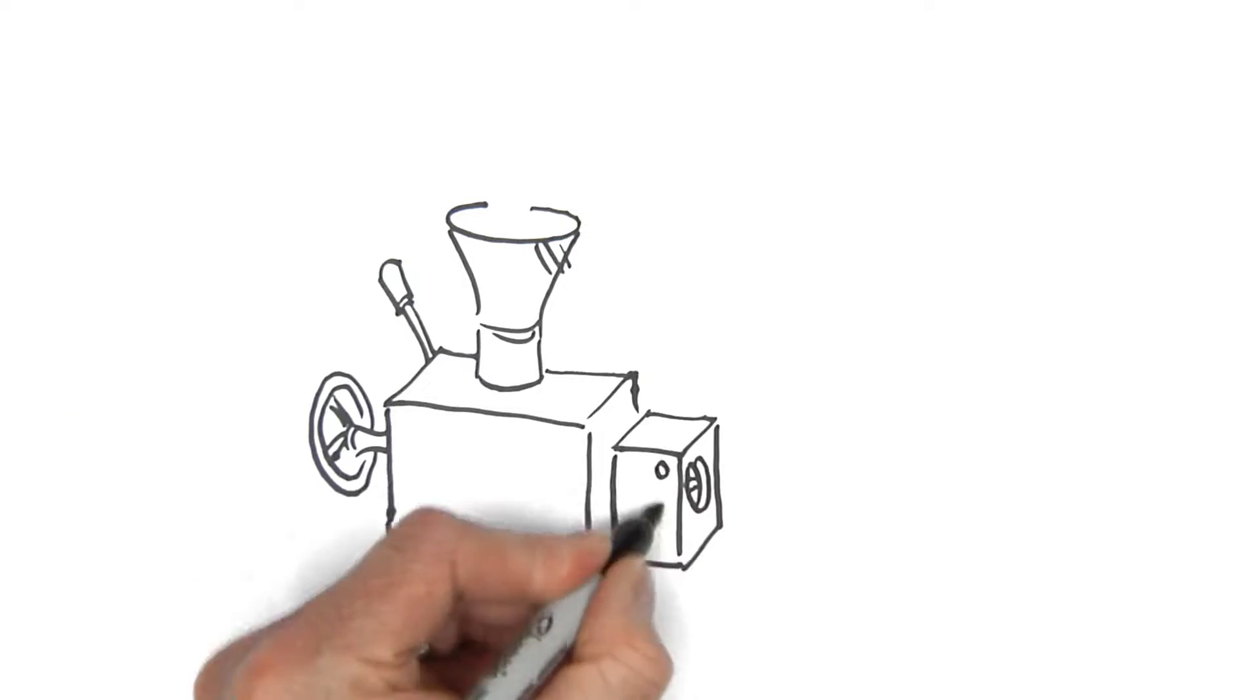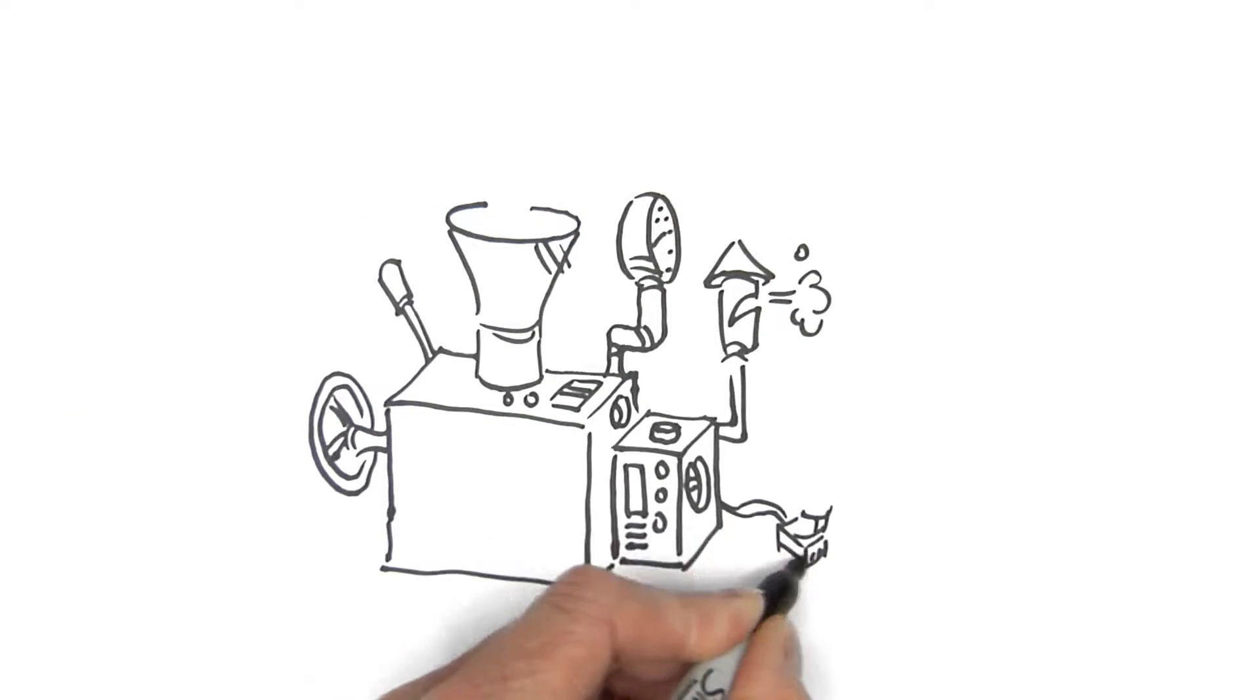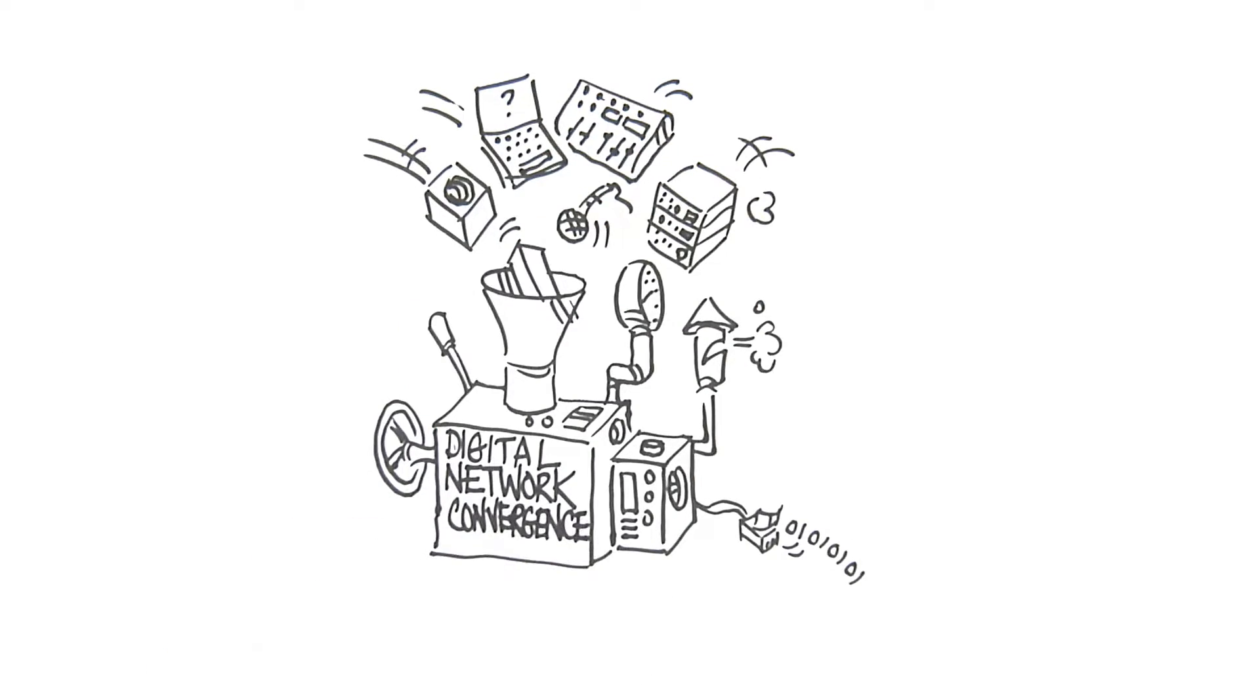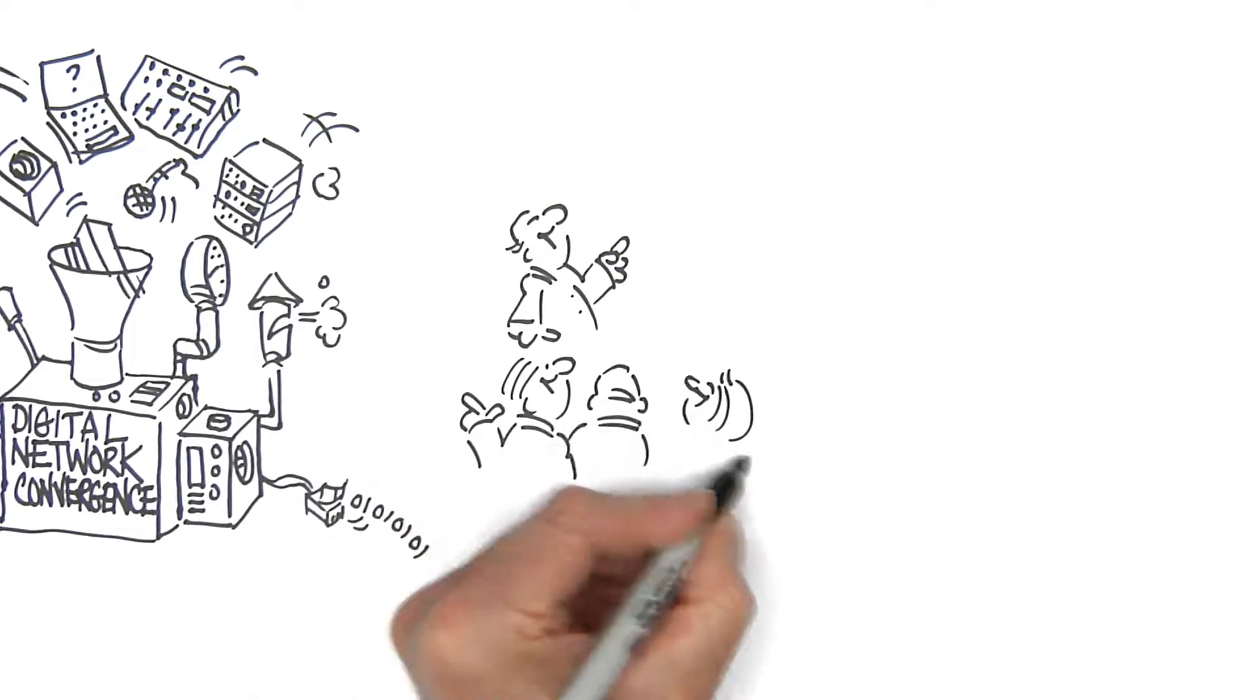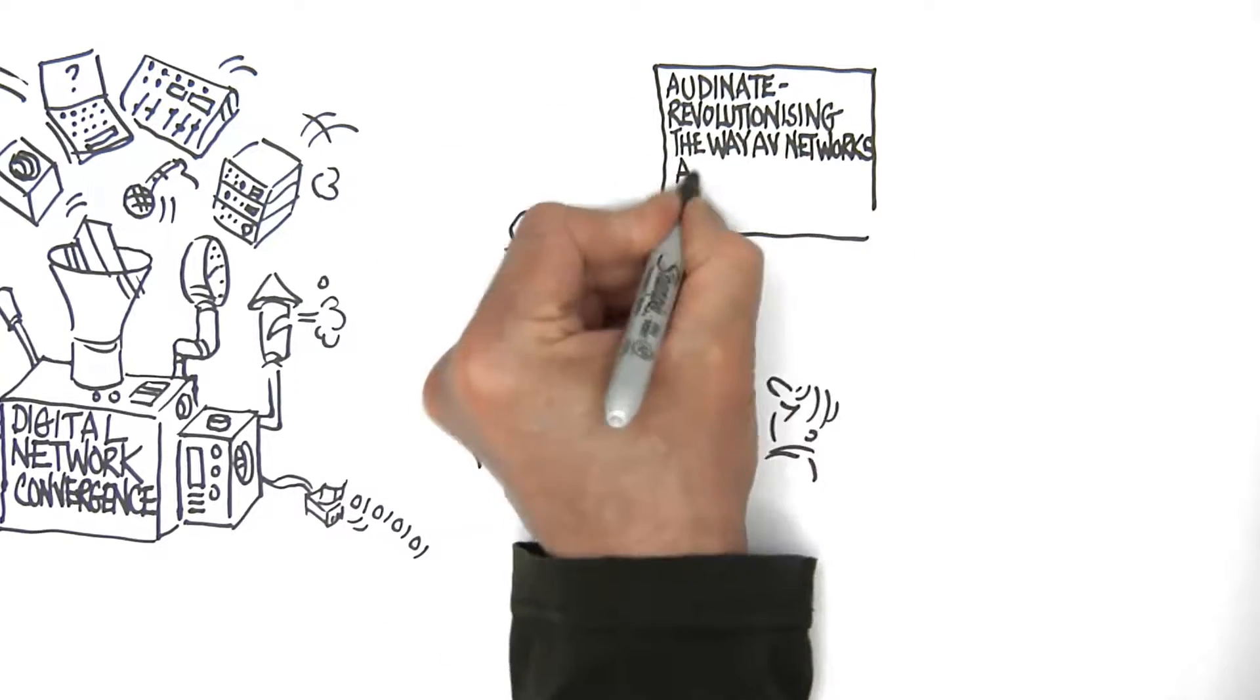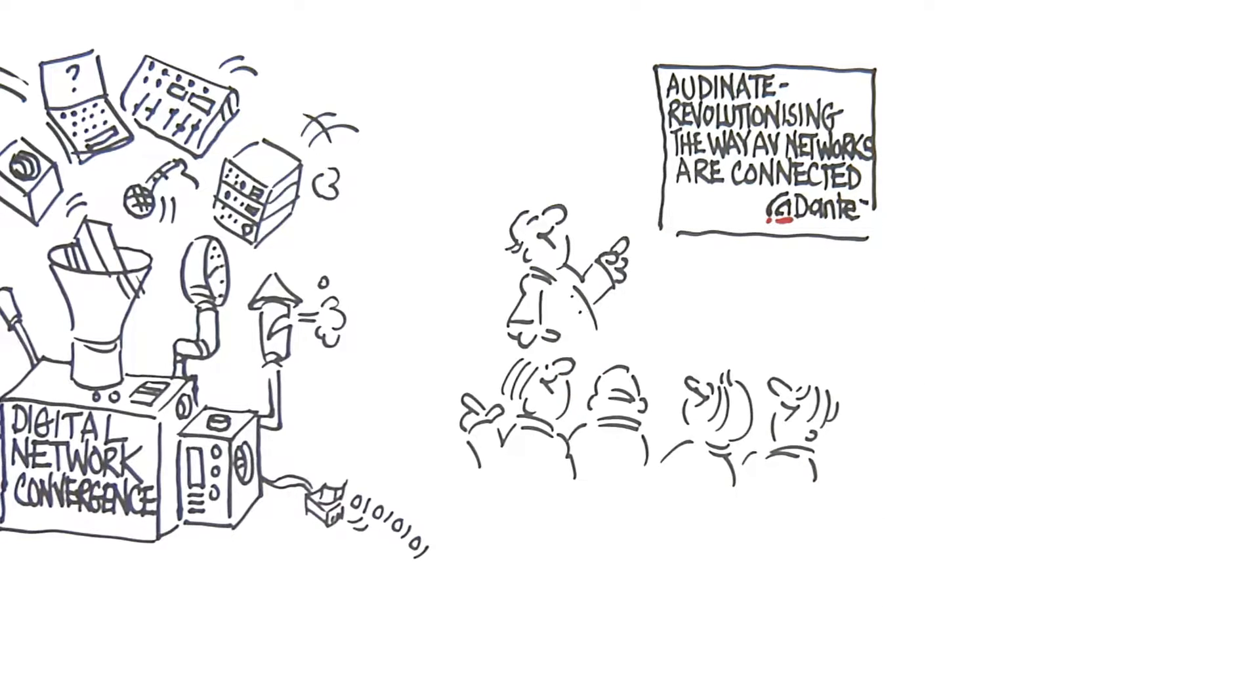Network convergence of AV and IT networks are merging as equipment transitions from analog-connected systems to digital. Ordinate is revolutionizing the way AV networks are connected by creating the award-winning solution Dante.